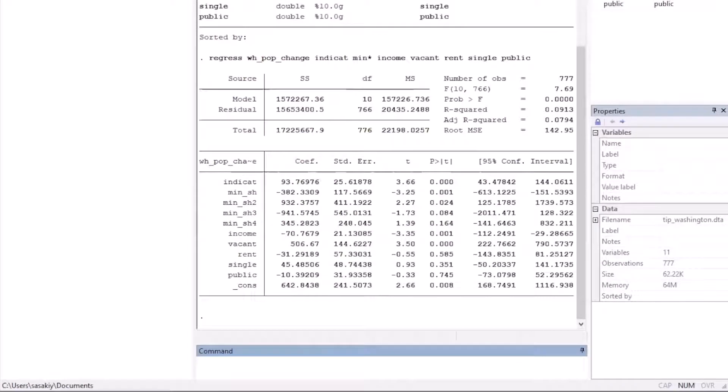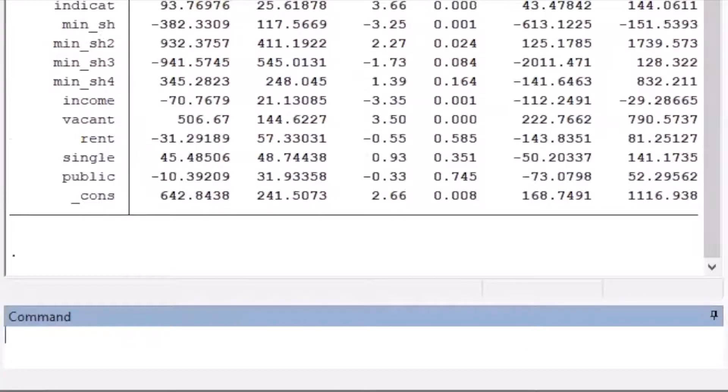If there are many outliers, then these point estimates and standard errors may not be credible. To check the credibility, let's use the testout command. Recycle the command line for the regression. To run the test, all you need is to replace the regress command by the testout command.